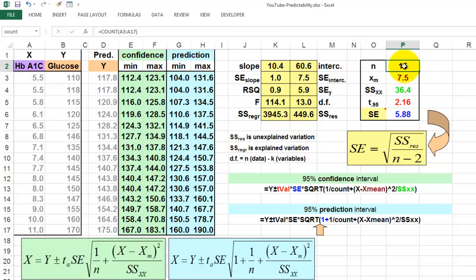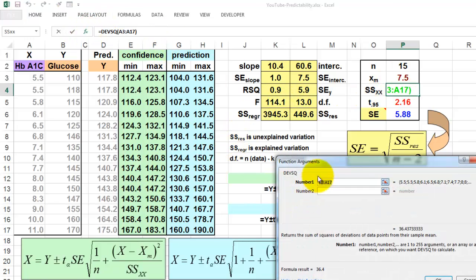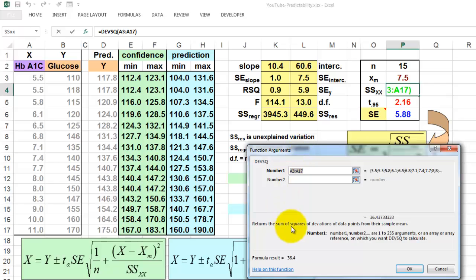Calculate how many cases we have. I used count a3 through a17. Find the average, average of all the values in column A. Use the function DEVSQ. It returns the sum of the squares of deviations.